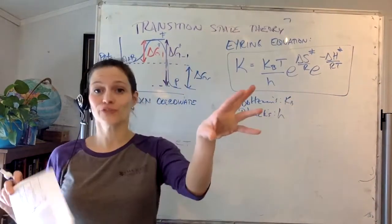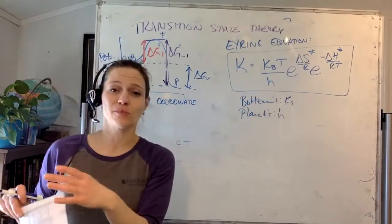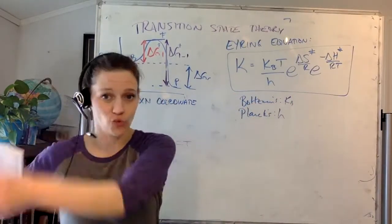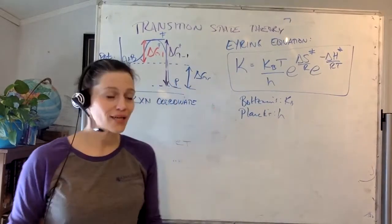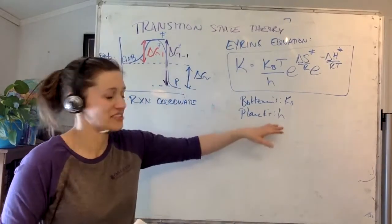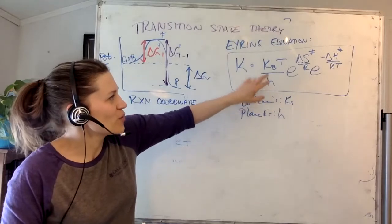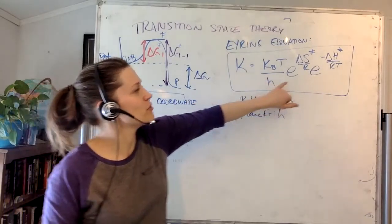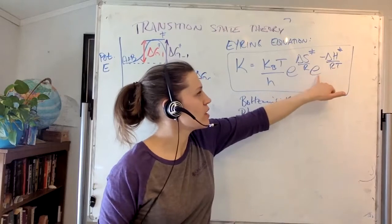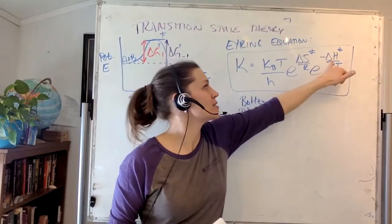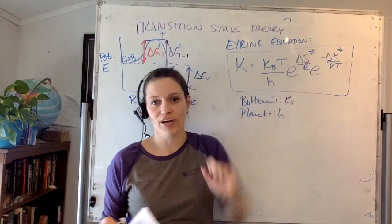For those of you who had quantum with me last spring, and those about to embark on quantum in a few weeks — Planck's constant, we're on the quantum level now. So that ratio, kBT divided by H, multiplied by E to the delta S double dagger over R, times E to the minus delta H double dagger over RT — entropy of activation and enthalpy of activation.